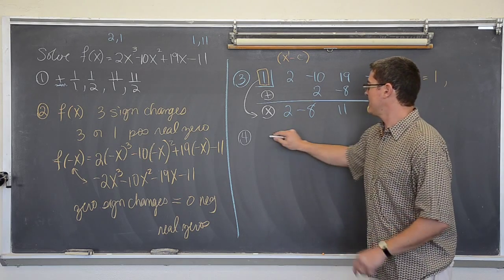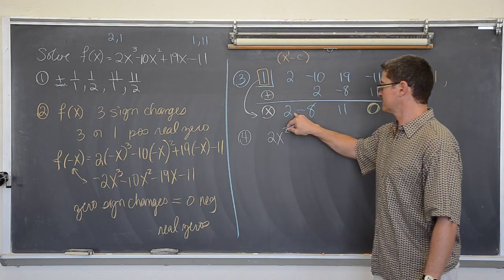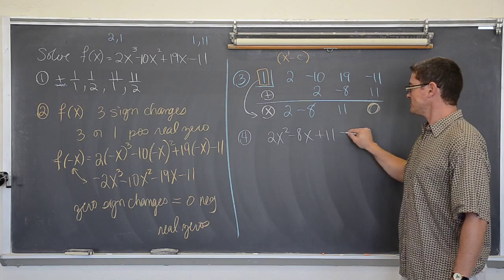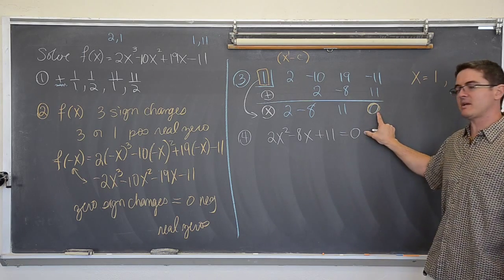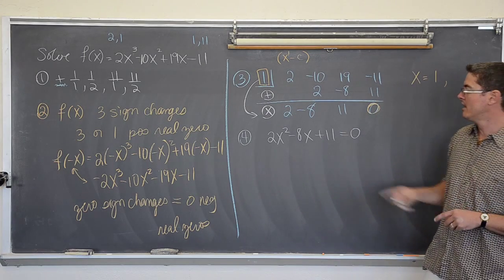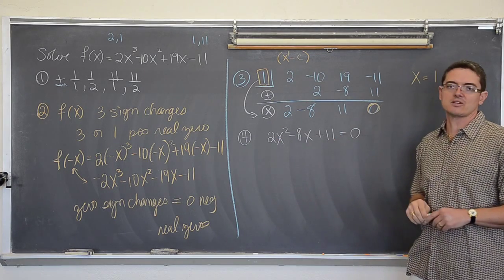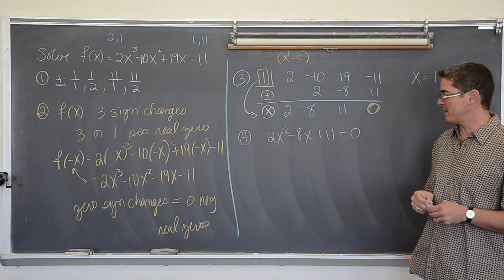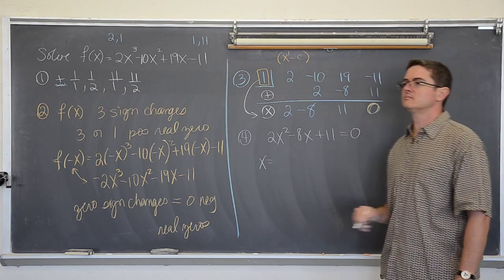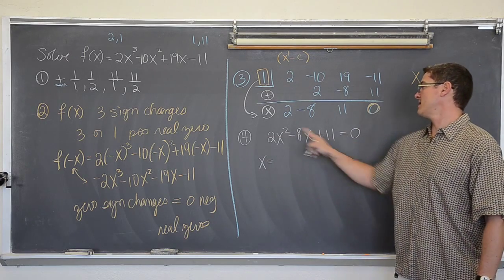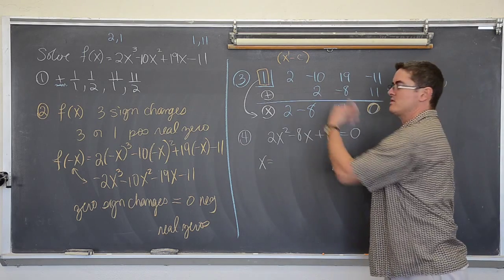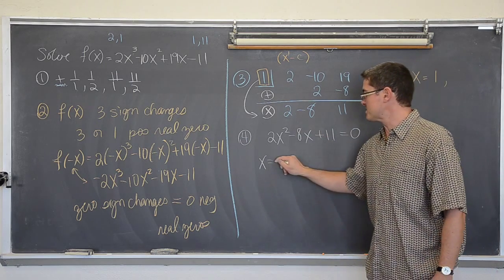Let's see if it crosses anywhere else. So we got 2x squared minus 8x plus eleven equals zero. We are trying to find x-intercepts, that is when y equals zero. And this will not factor. So we are going to finish with the quadratic formula. 2 times 11 is 22, there are no factors of 22 that give you negative 8.